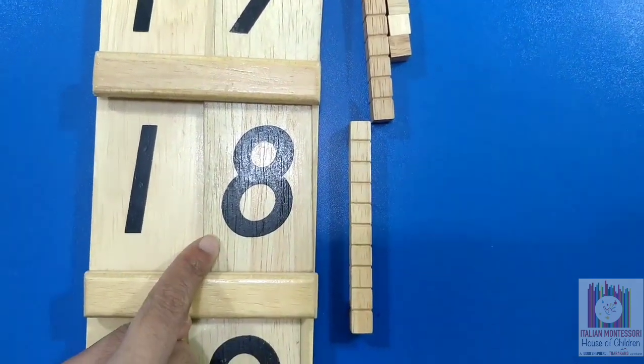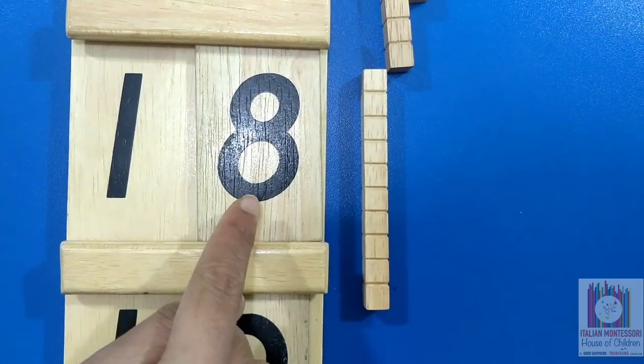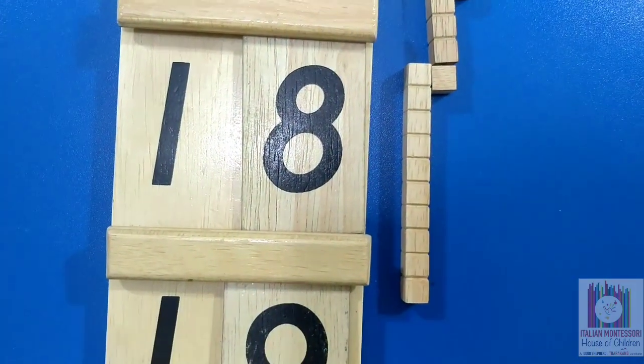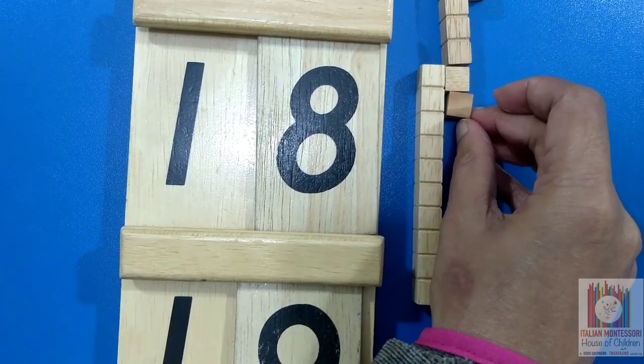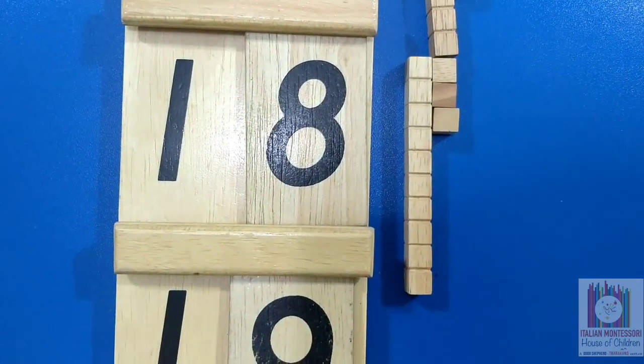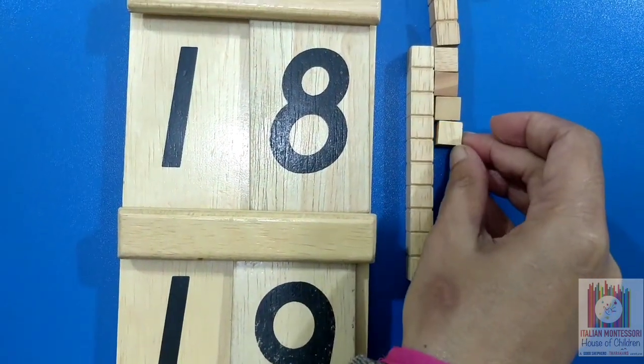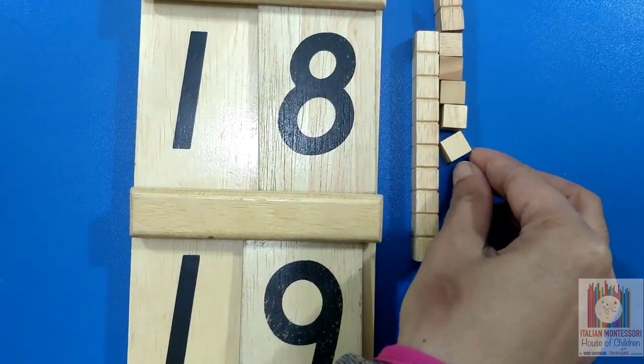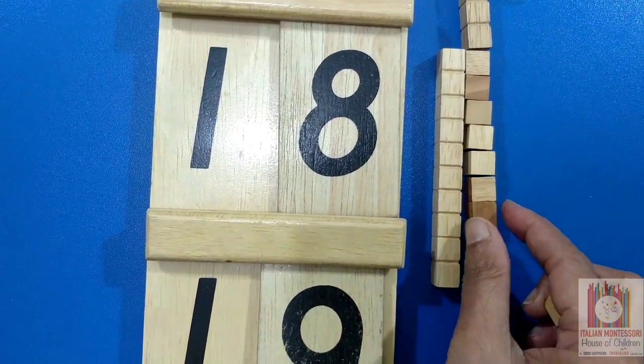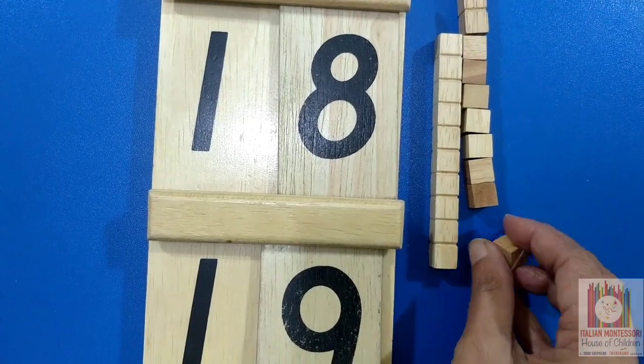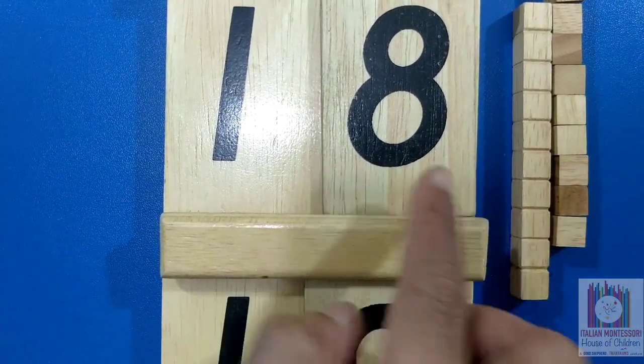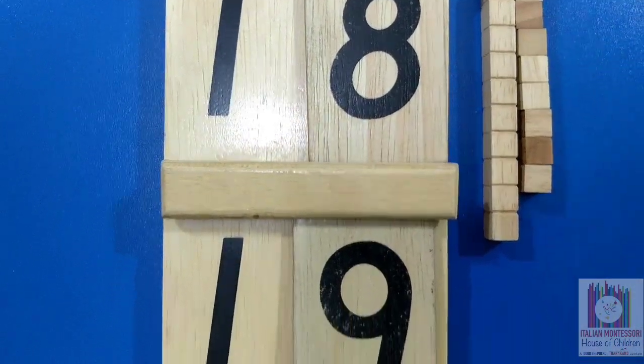This is number 18. Let's make 18 with these beads. 1, 10, 11, 12, 13, 14, 15, 16, 17, 18. 1, 10 and 8 units makes 18. Now let's make 19.